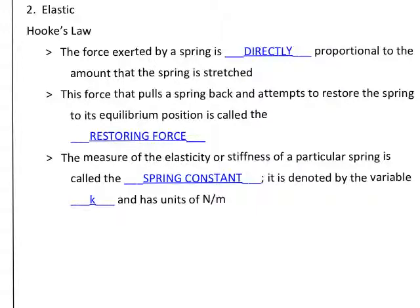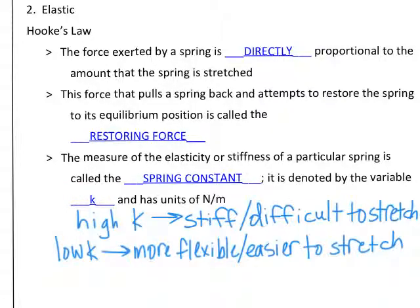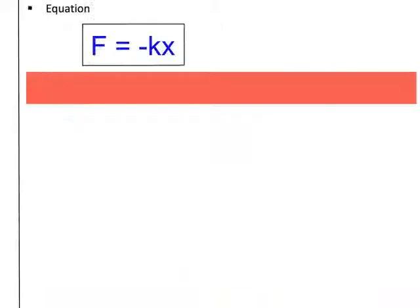The measure of the elasticity or stiffness of a particular spring is called the spring constant, denoted by lowercase k, with units of newtons per meter. A higher k value means the spring is stiffer and harder to stretch; a lower k value means the spring is more flexible and easier to stretch. The formula for Hooke's Law is F equals negative kx, but we are going to deal with just the magnitude, so we will use F equals kx.